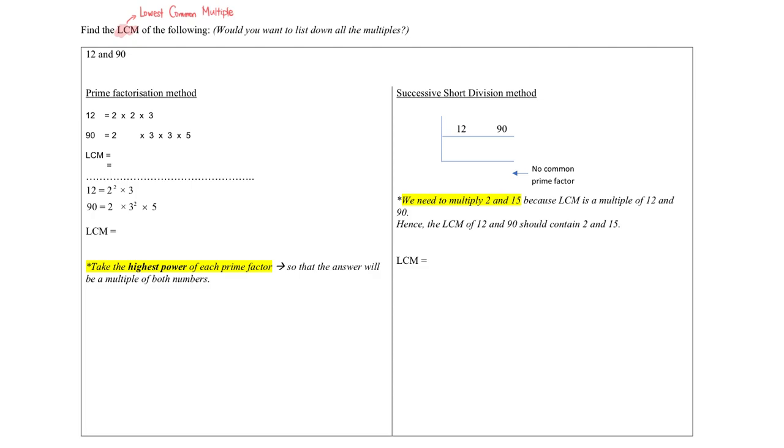I'm going to introduce two methods for you all to see. In order for this lowest common multiple to be of 12 and 90, the very first thing to take note is that in order for it to be a lowest common multiple, this lowest common multiple must have all the prime factors of, in this case, 12 and 90.